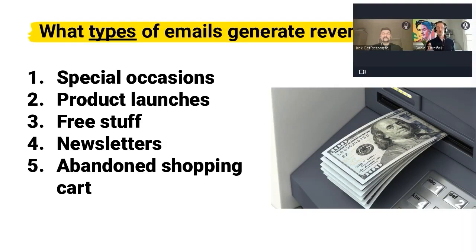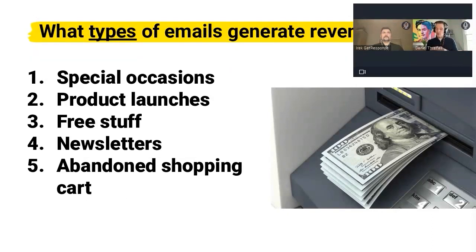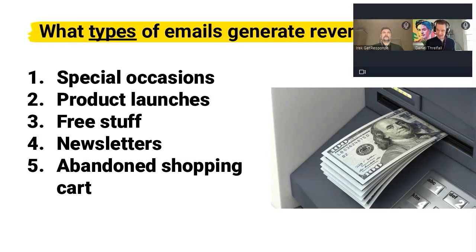The types of emails that generate revenue include special occasions — a broad category that includes the prospect's birthday, holidays and events like Christmas. You want to say 'Happy holidays, by the way we have a wonderful gift for you.' Also product launches — got a new product, send an email with a CTA. Free stuff is the best way to get people engaged and into the funnel. Newsletters, if you have a cadence going out, are a great way to engage your audience and provide an opportunity to purchase. And then abandoned shopping cart — if you run an e-commerce store, I'll give you a quick insight on how to maximize revenue from abandoned shopping carts.